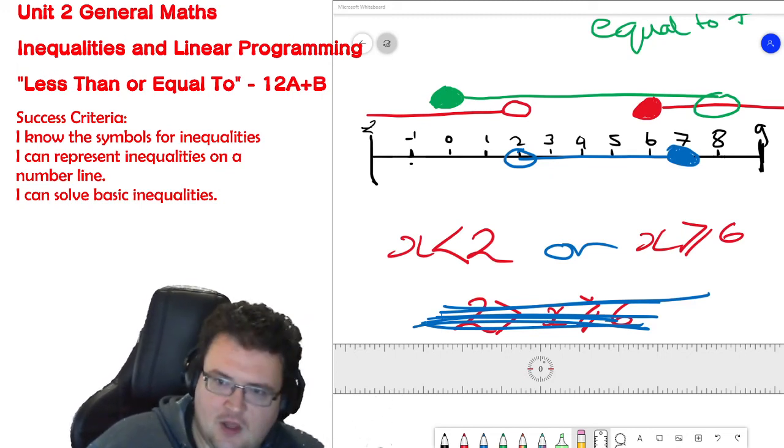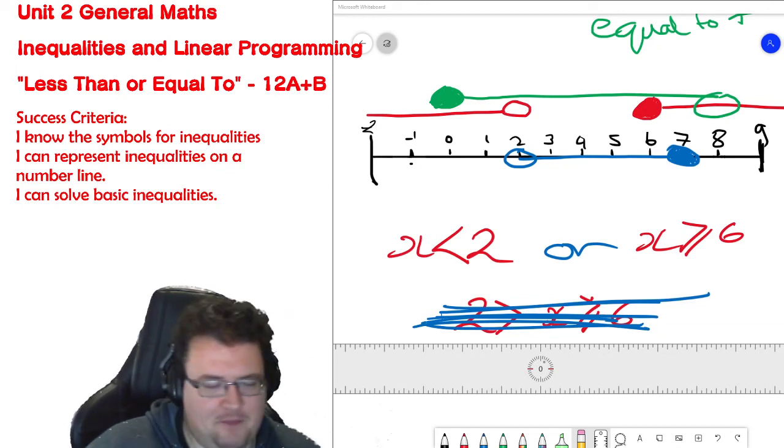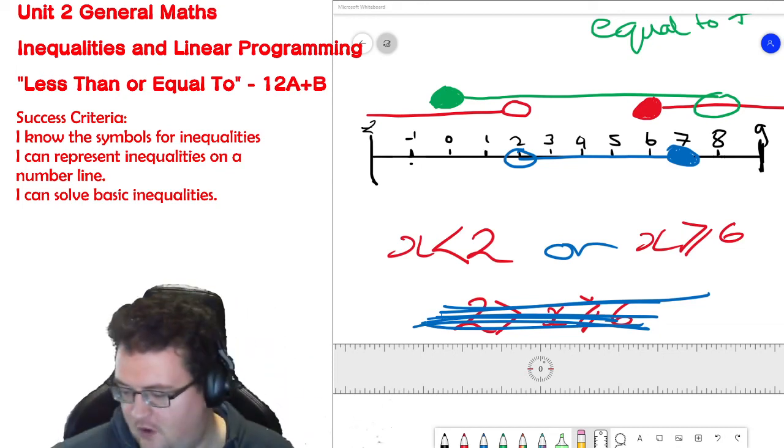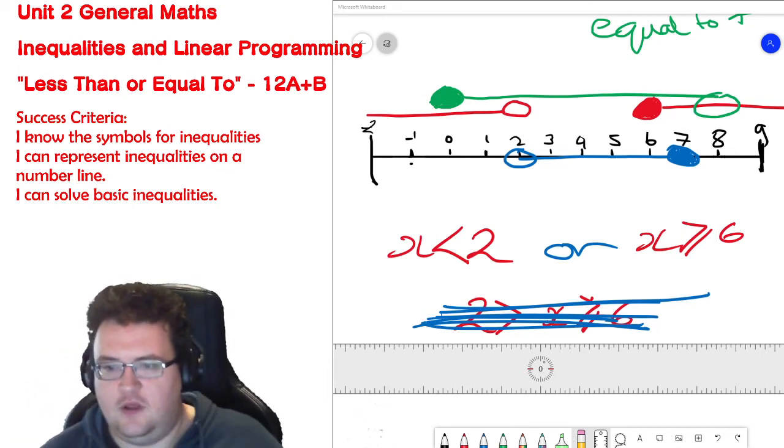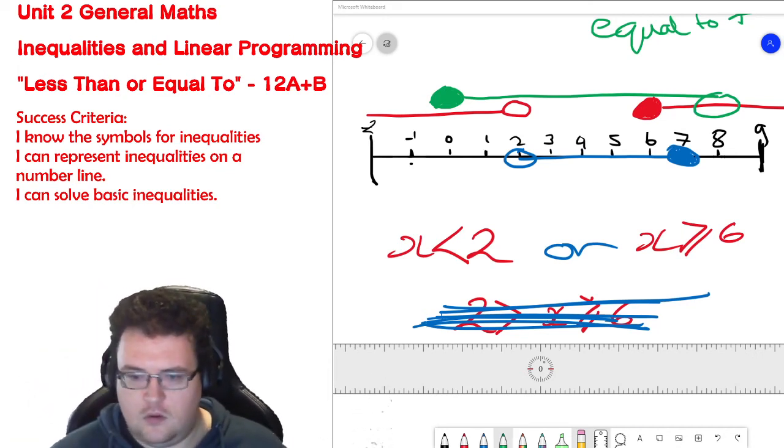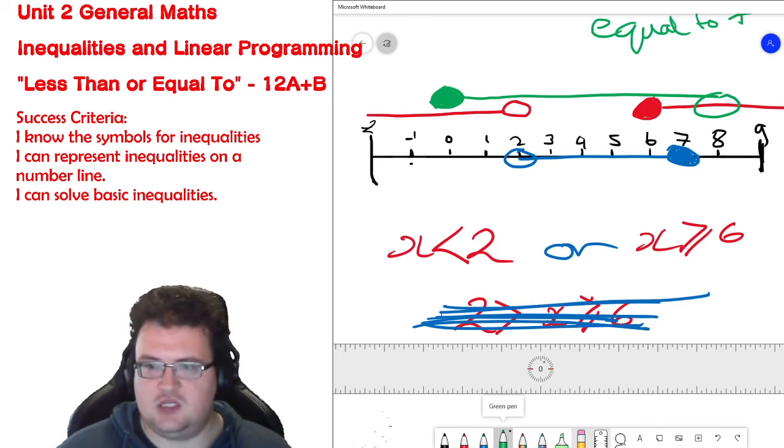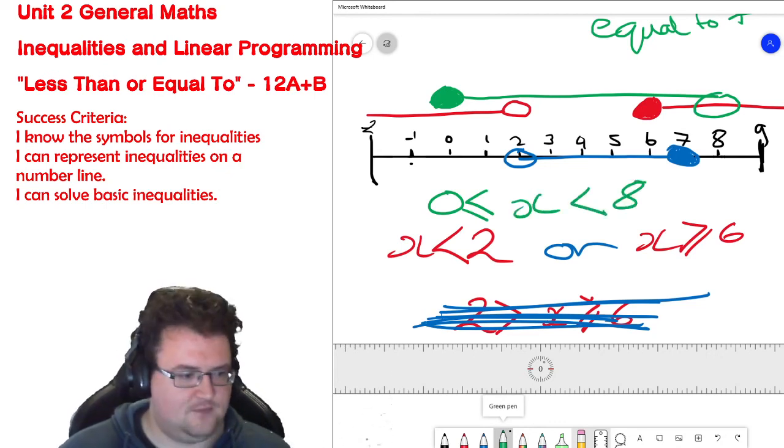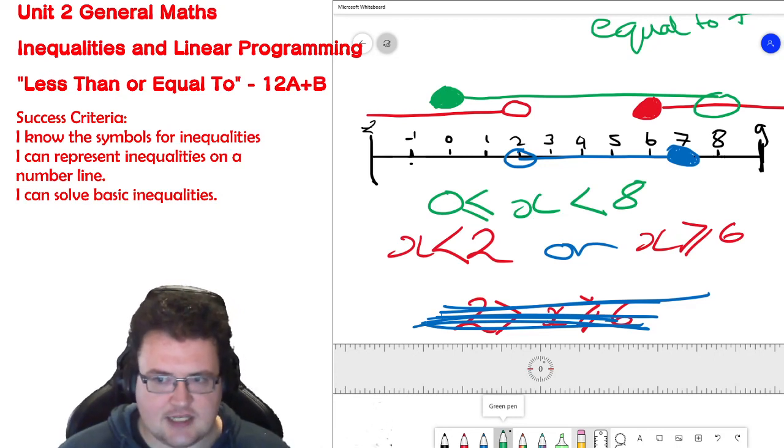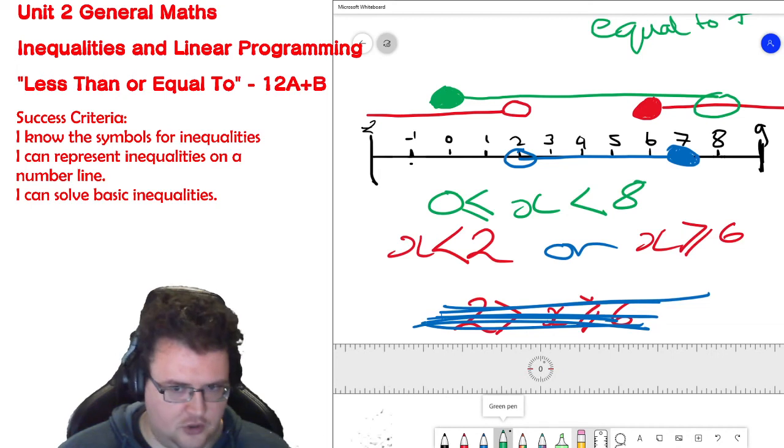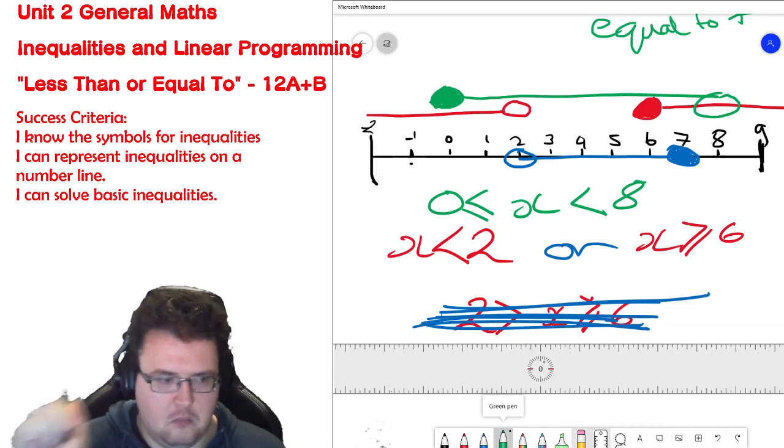So in green, it's 0 is less than or equal to x which is less than 8. So not including 8 but it's any number between 0 including 0 and 8 but not 8.